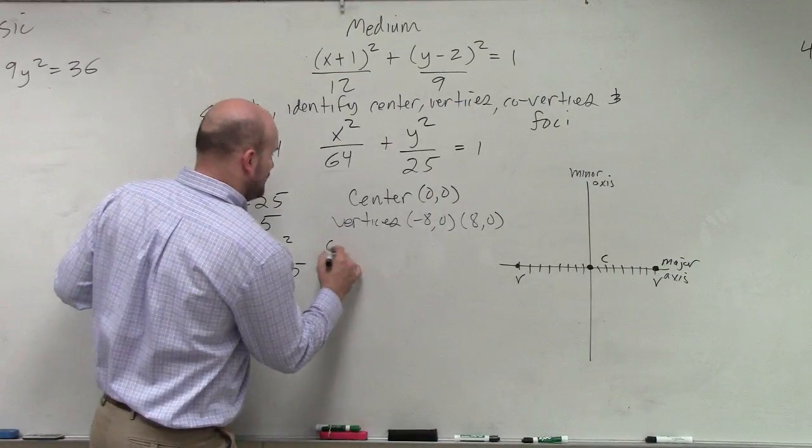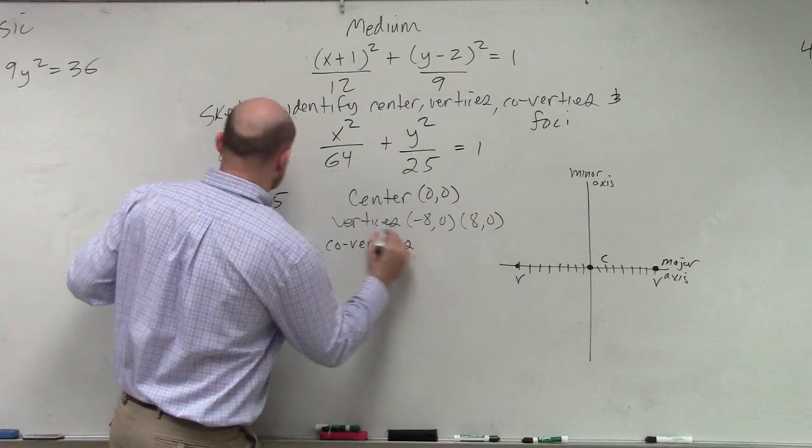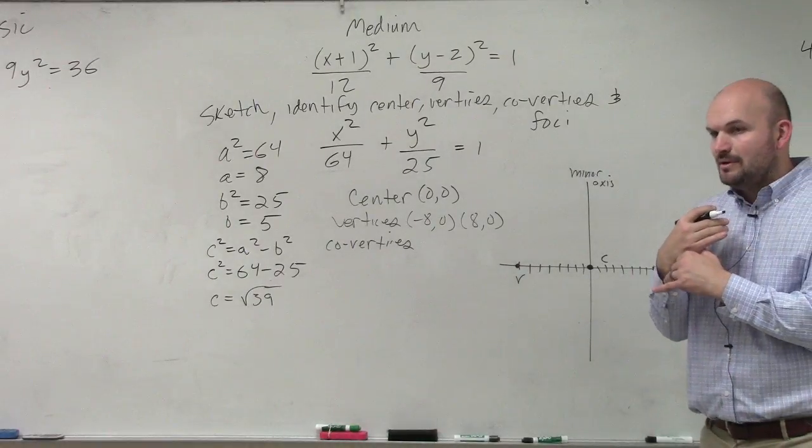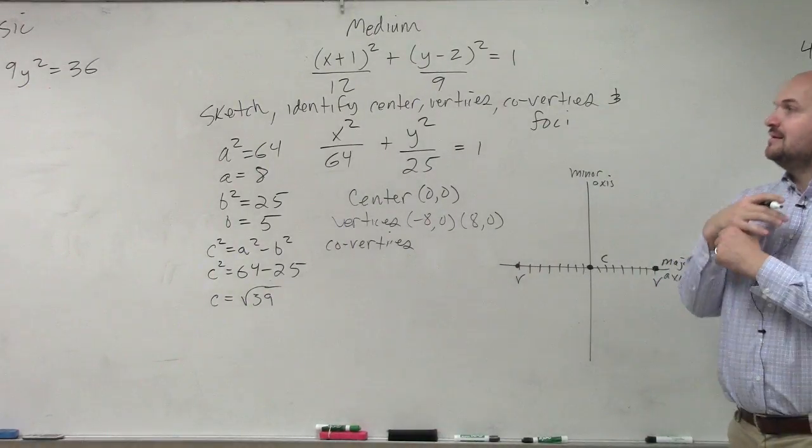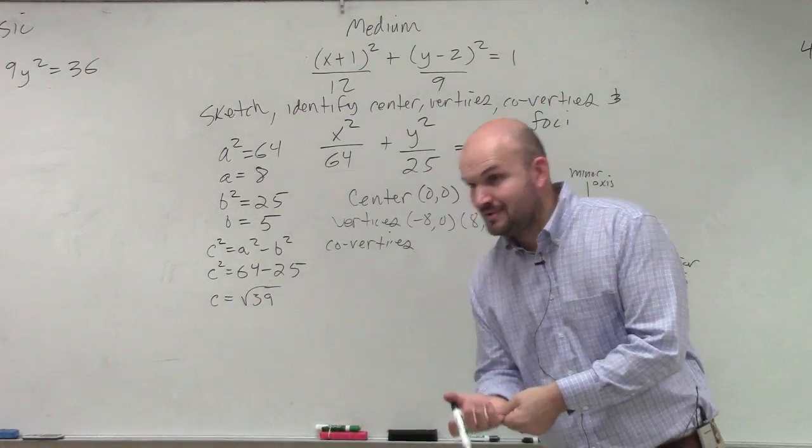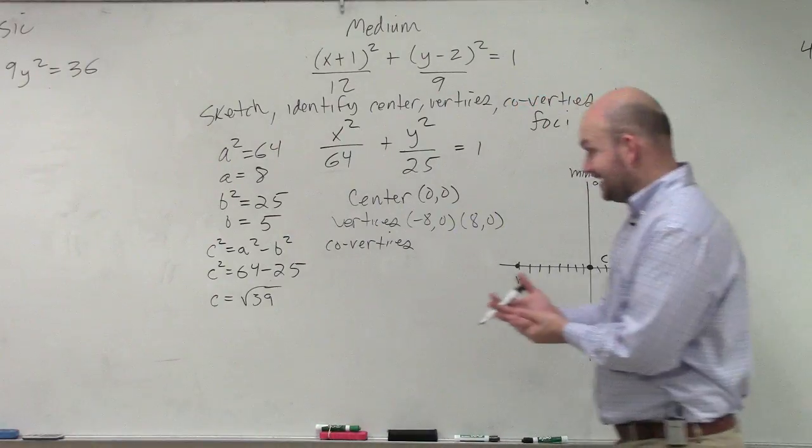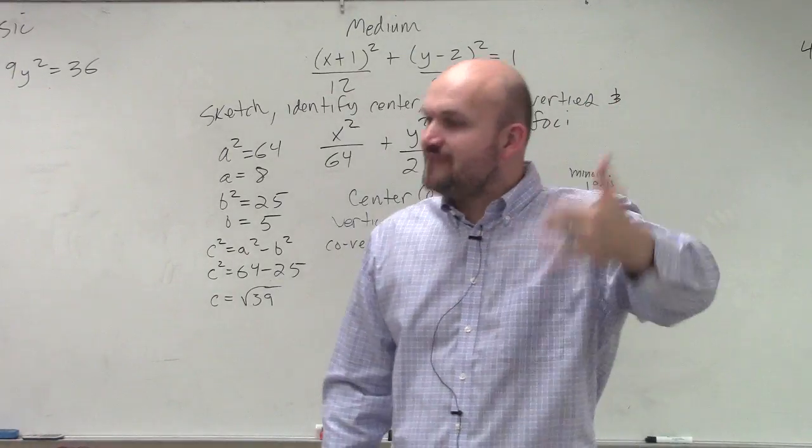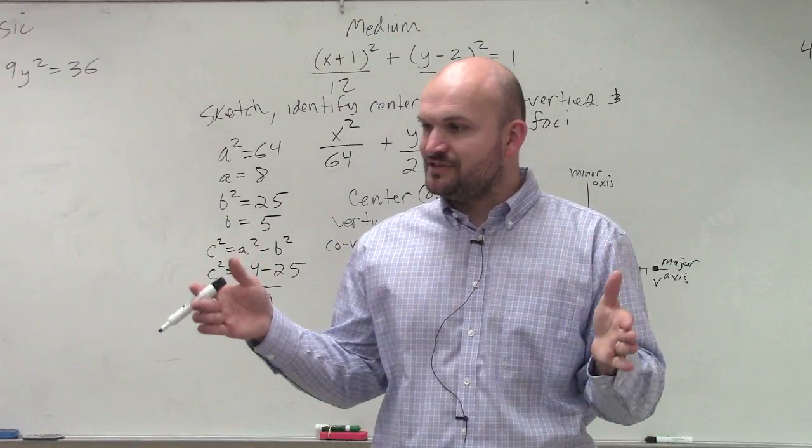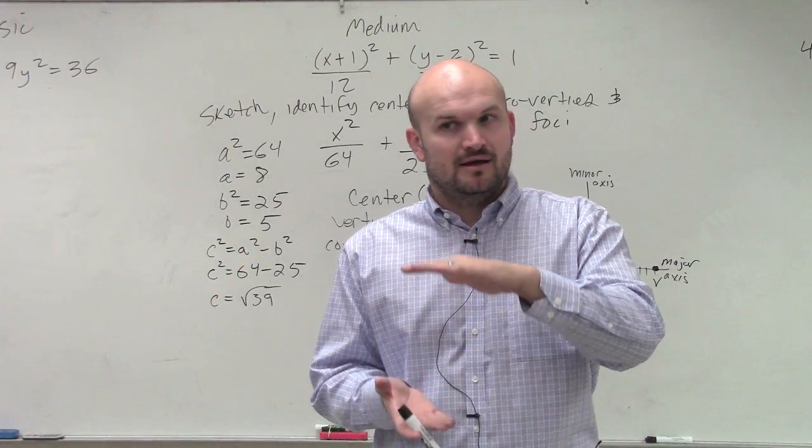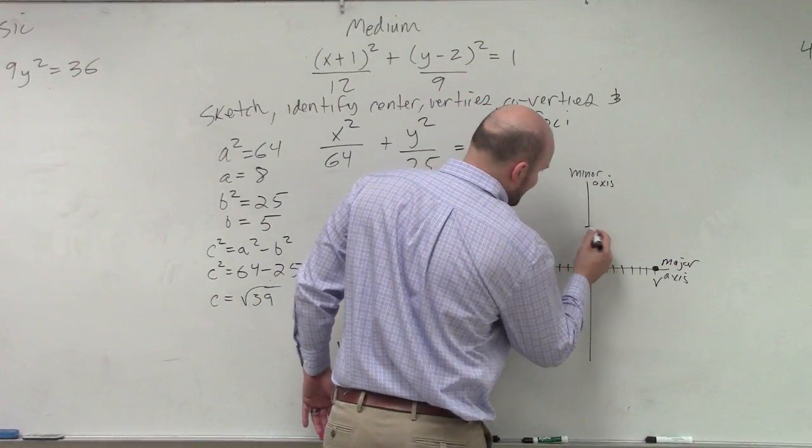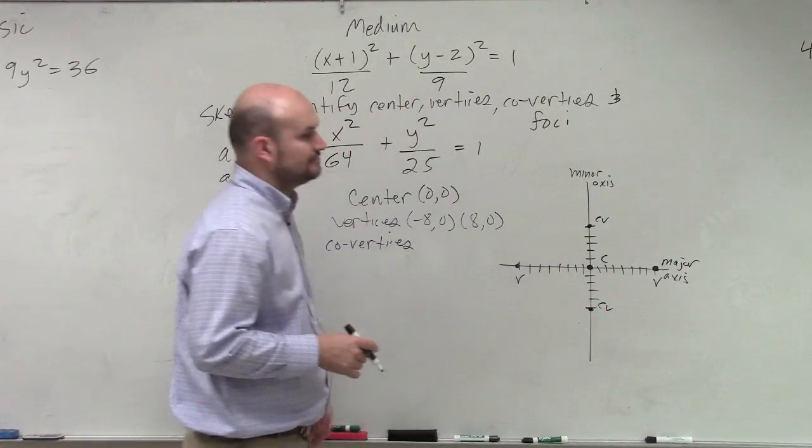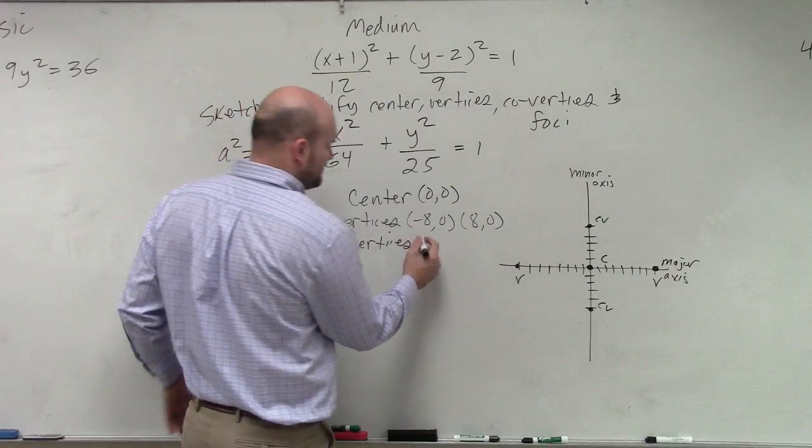Then the next thing is, let's find the co-vertices. So the distance from the center to your co-vertices is B. What is our value of B? 5. So from our center to our co-vertices is 5. If your vertices are going left and right, that means your co-vertices are going up and down. Co-vertices. Can we easily write down what those points are? Sure.